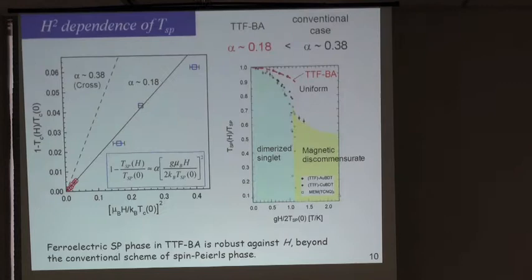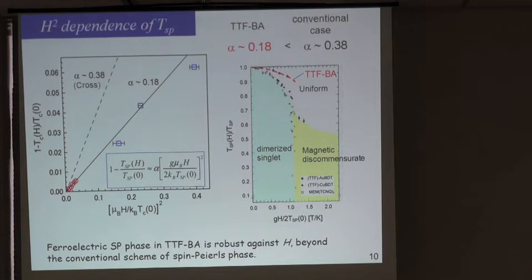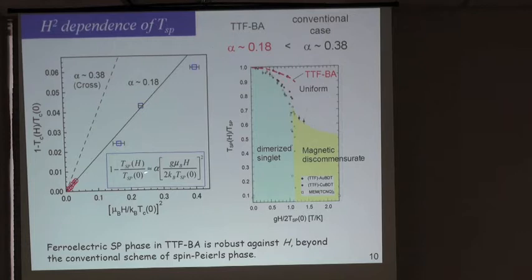In the spin-Peierls phase diagram (temperature vs. magnetic field), the dimerized state is destroyed by field and the soliton lattice or magnetic discommensurate phase appears. We plotted TTF-bromanil in this phase diagram and found it deviates from the conventional spin-Peierls diagram. The coefficient describing suppression of the transition temperature with magnetic field is much smaller, indicating a very strong coupling of spin with the lattice and pi-molecular overlap.